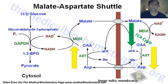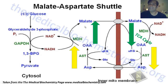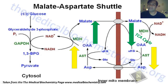Now, what happens to this oxaloacetate in the cytoplasm? Oxaloacetate gets converted to malate. This is essentially the TCA cycle reaction run in reverse. There are two isoforms of malate dehydrogenase — MDH1 in the matrix that we studied, and MDH2, the cytoplasmic version — and it runs in the opposite direction, converting oxaloacetate to malate.